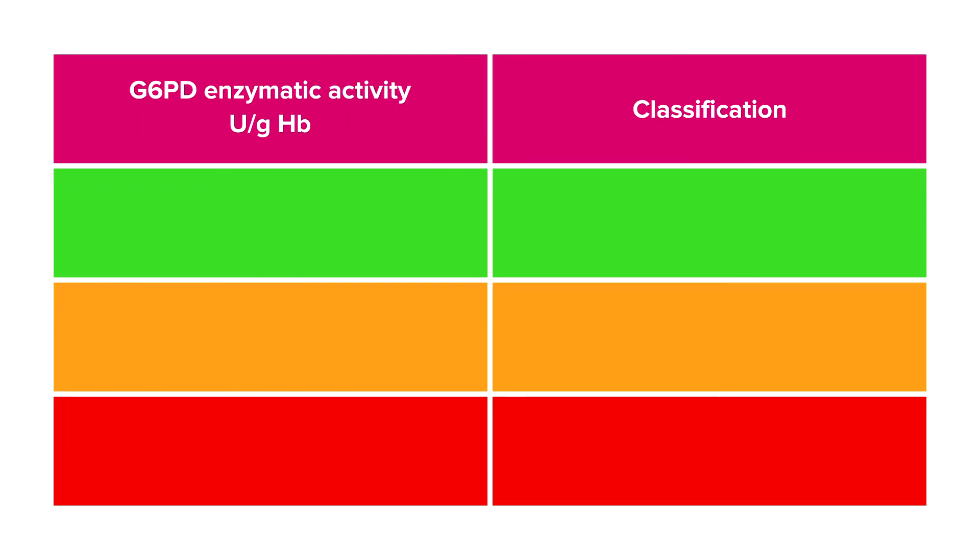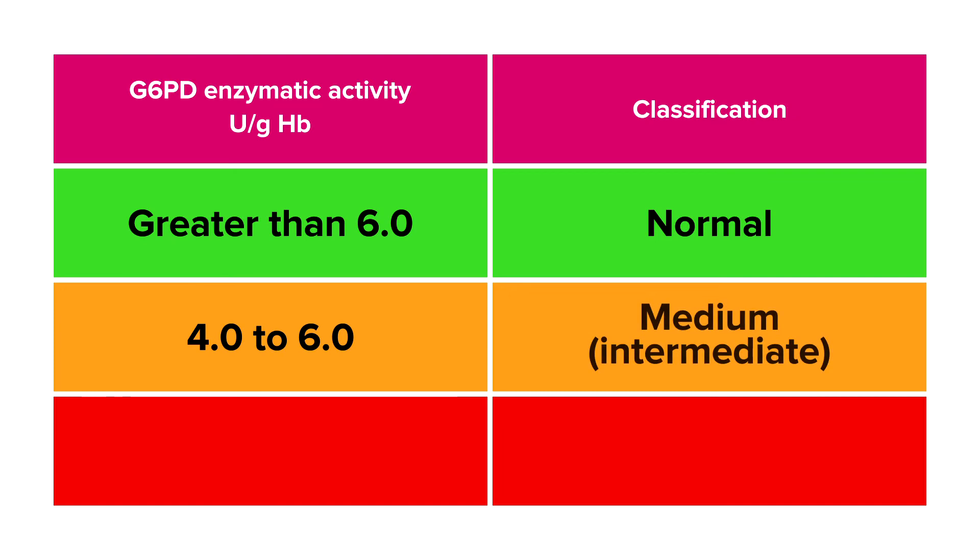If the G6PD value is 6 or higher, the patient has normal G6PD activity. If the value is between 4 and 6, the patient has intermediate G6PD activity. If the value is less than 4, the patient has very low G6PD values.